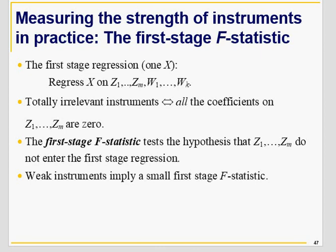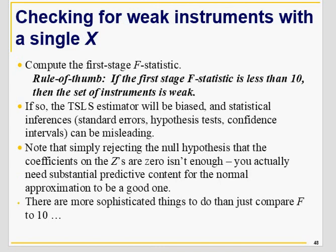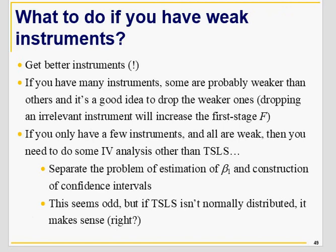To test whether an instrument is weak, regress X on all instruments and all exogenous regressors. If the F-statistic is less than 10, instruments are weak; if the F-statistic is greater than 10, instruments are strong. That simple rule of thumb: if you regress the endogenous regressor on all instruments and exogenous regressors and the F-statistic is greater than 10, instruments are strong. I'll demonstrate this using cigarette demand data.